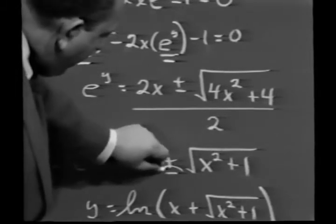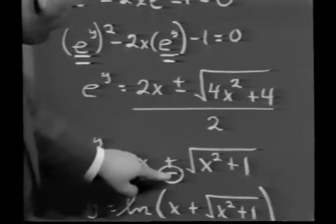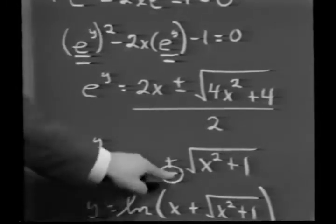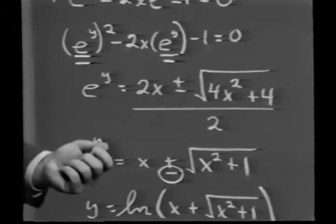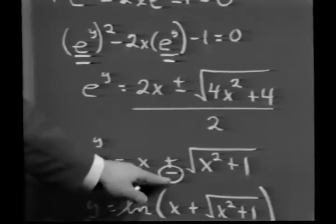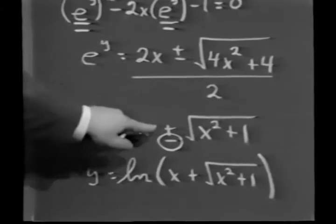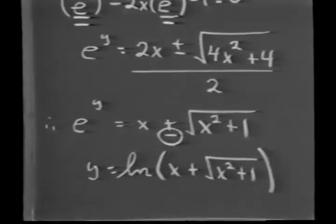In other words, in terms of this particular problem, the minus sign here is extraneous. And we therefore wind up with e to the y is x plus the square root of x squared plus 1.